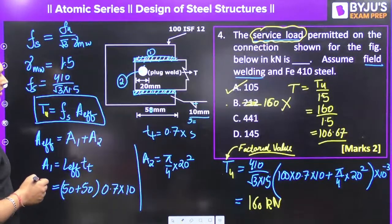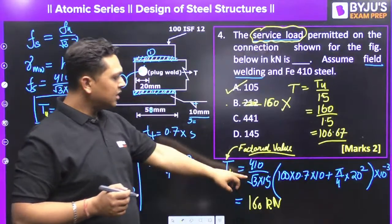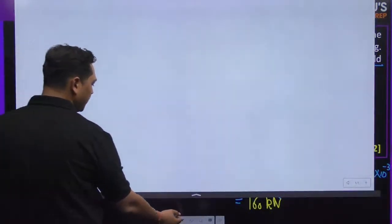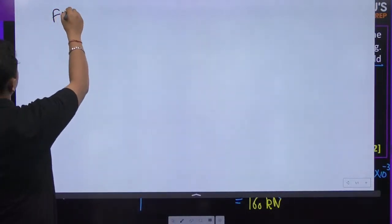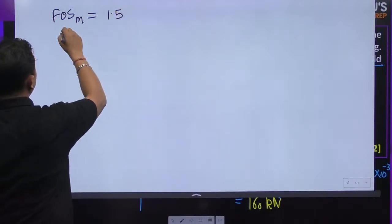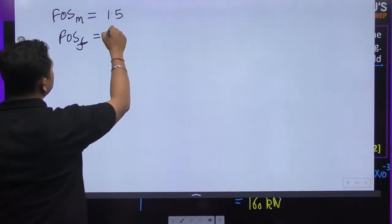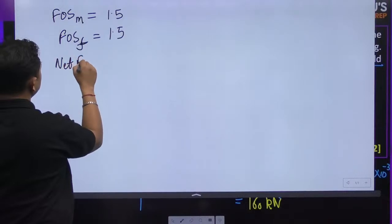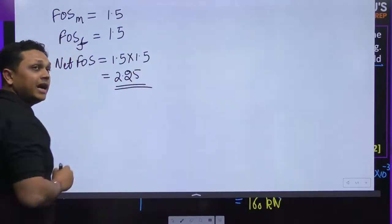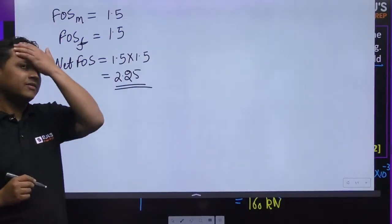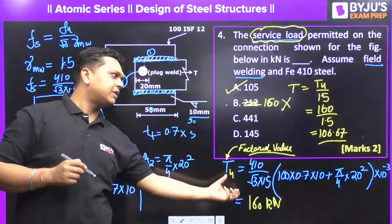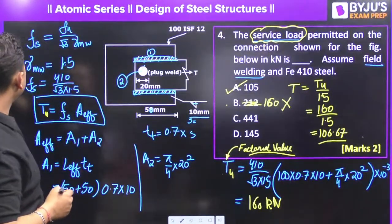If the factor of safety is asked: factor of safety for material is 1.5 for field welding, and factor of safety for load is also 1.5. Net factor of safety equals 1.5 into 1.5, which is 2.25. That is why the values are factored values — there is a factor of safety for load as well.